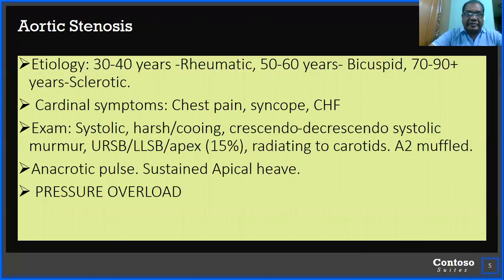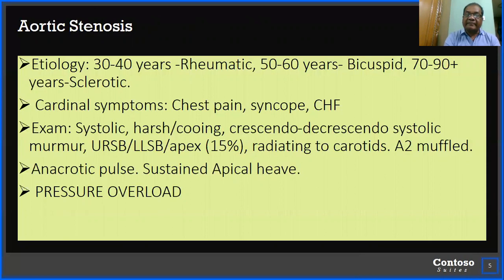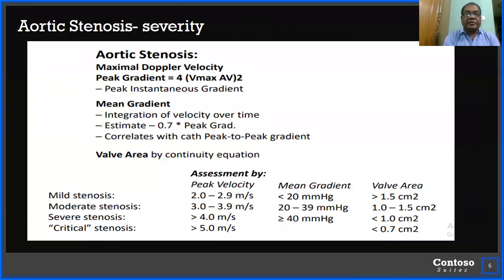The cardinal symptoms of aortic stenosis are chest pain, syncope, and congestive heart failure. On physical examination, a harsh systolic murmur — crescendo-decrescendo type — is audible at the upper right sternal border or lower left sternal border, and sometimes to the apex. In 15% of cases it radiates to the carotid. The aortic second heart sound is muffled, there will be an anacroic pulse, and an apical heave. The main pathophysiology of aortic stenosis is pressure overload.